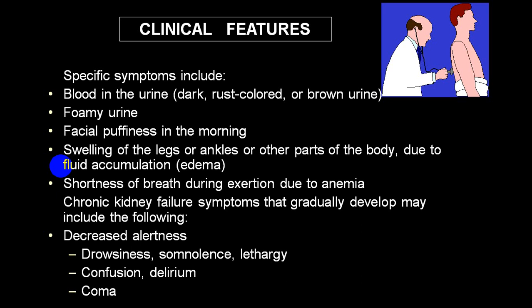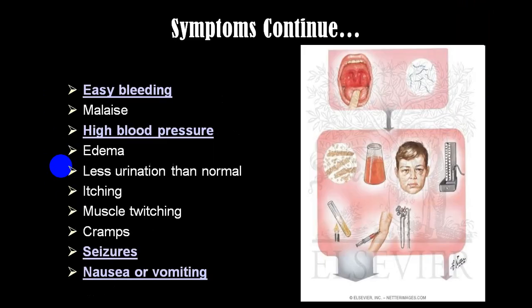Because of persistent anemia, the person complains of shortness of breath, weakness, fatigue, leg cramps, and chronic kidney failure symptoms. Signs of uremia from urea accumulation include drowsiness, somnolence, lethargy, confusion, delirium, and sometimes uremic encephalopathy with uremic flap. The person may also have easy bleeding, malaise, hypertension, edema, decreased urine output (oliguria), severe itching, muscle twitching, cramps, uremic seizures, nausea, vomiting, and cerebral edema.